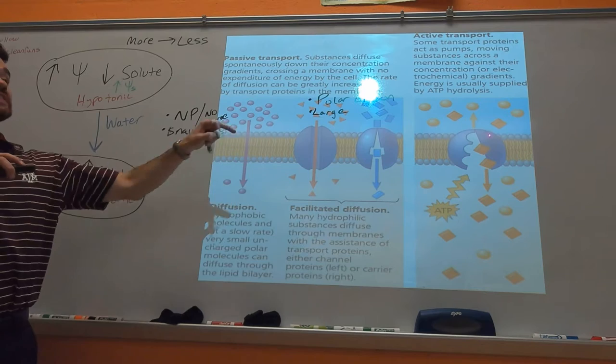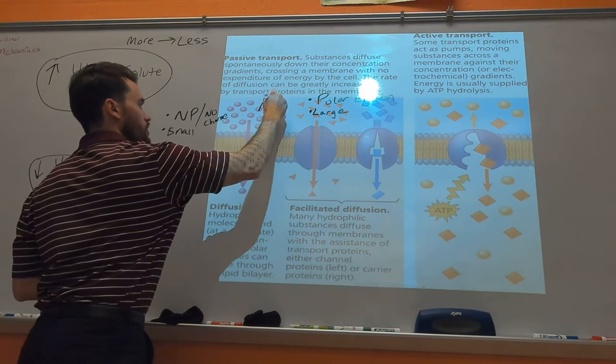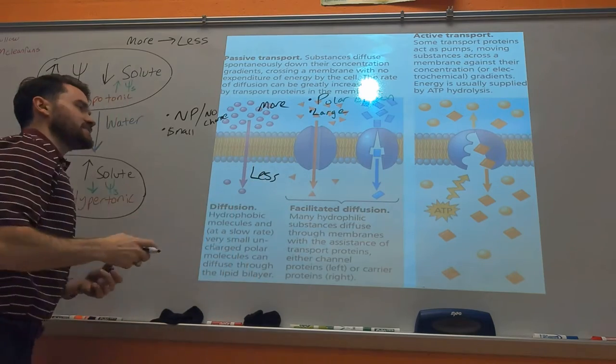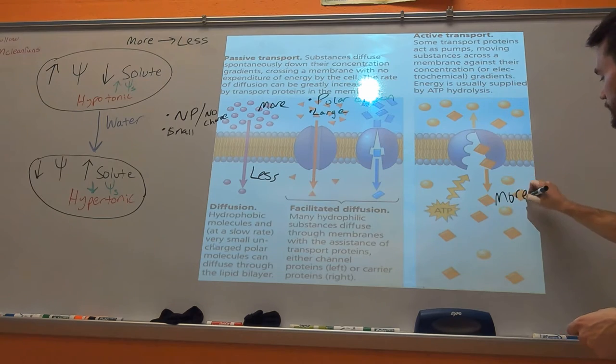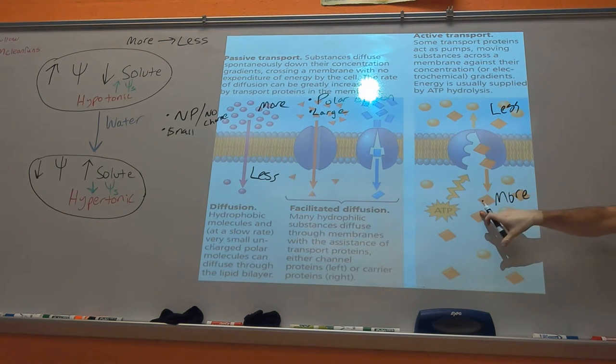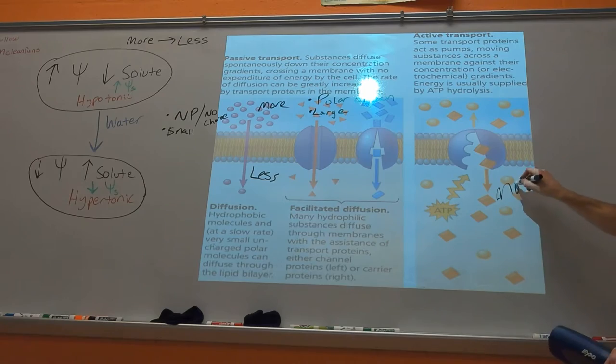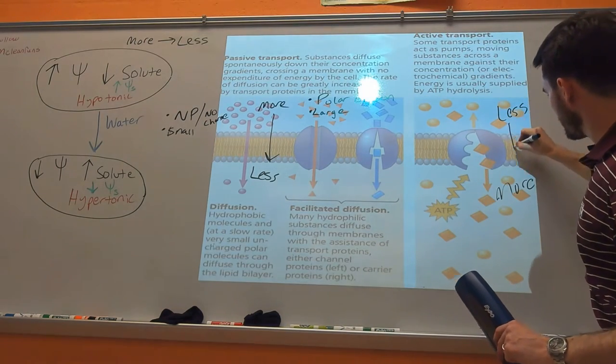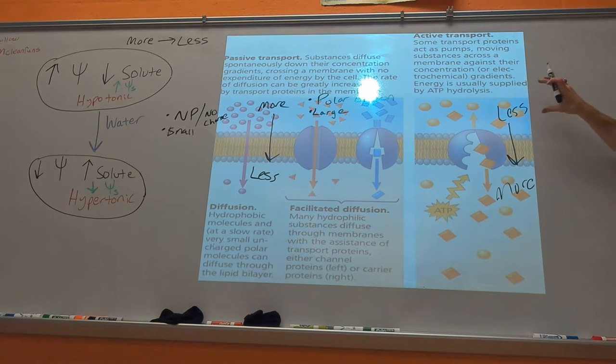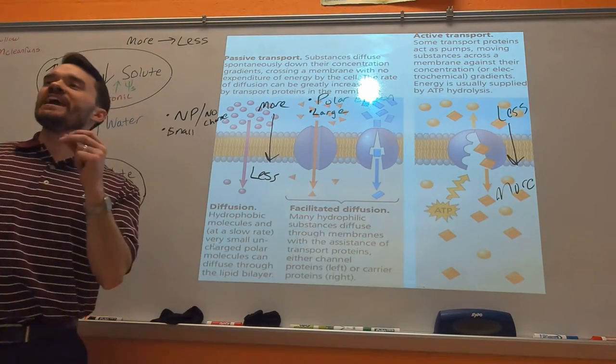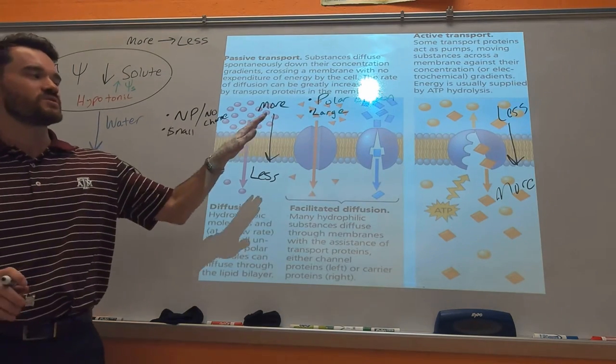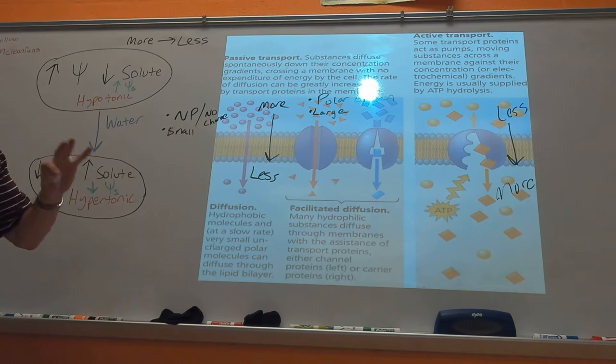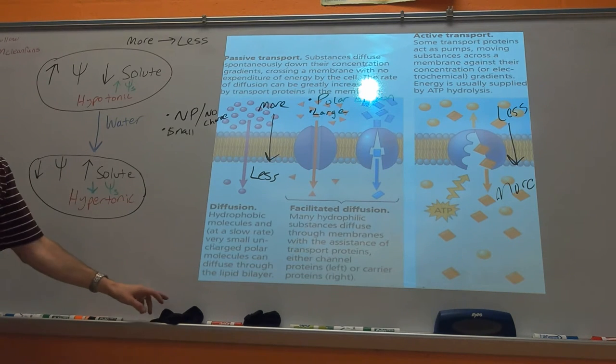Now then active transport, you're doing the opposite. So with passive transport, we went from more to less. Active transport, you're doing the opposite. You're going from more to less. You're doing this. And then here, you're doing this. Like you already, normally it wants to go this way, but now you're going against nature. So to do that, you have to put in energy. The energy currency of the cell is ATP. ATP is what's going to power this process.